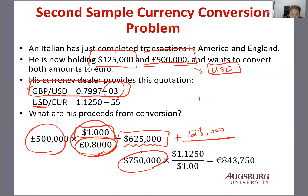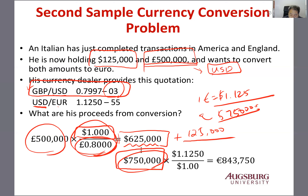Now you know that 1 euro equals $1.125, so with $750,000 you can calculate the final euro amount. That's how to get the proceeds of this conversion — take the total dollar amount and divide by the dollar-per-euro bid price to find the total euros received.